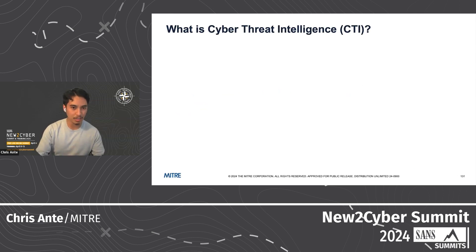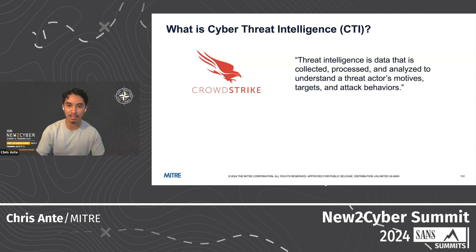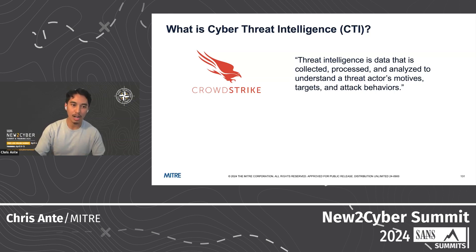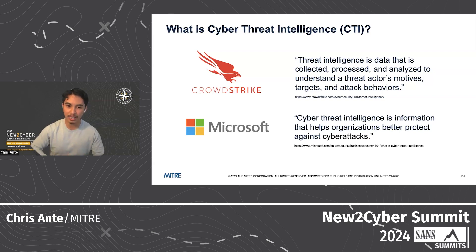Cyber threat intelligence may be a concept that some of you are familiar with, or maybe a buzzword that's kind of loosely defined. So I think it's important to level set with what CTI is in this context. CrowdStrike defines threat intel or CTI as information used to understand threat actor behaviors, including their motivations, the targets they go after, and their technical behaviors. Microsoft takes a more broad definition, characterizing it as information used to help organizations better protect themselves against cyber attacks. So combining both of those, CTI is understanding why threat actors do what they do, but also data meant to protect and inform decision makers in relevant organizations.